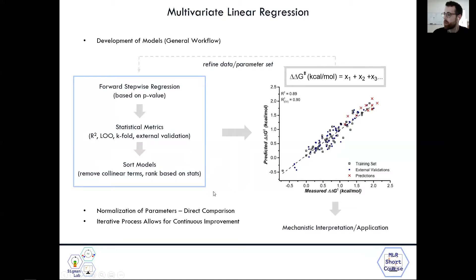The good thing about our modeling process is that we normalize the parameters, which allows for direct comparison of all the parameters. So now you can compare the different coefficients and how heavily one contributes relative to another. We can also look at the signs of them to see if there's a positive or negative trend relative to the delta-delta-g, which can be helpful in understanding how it correlates to different mechanistic features.